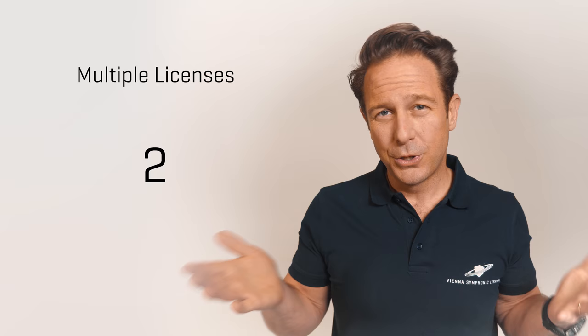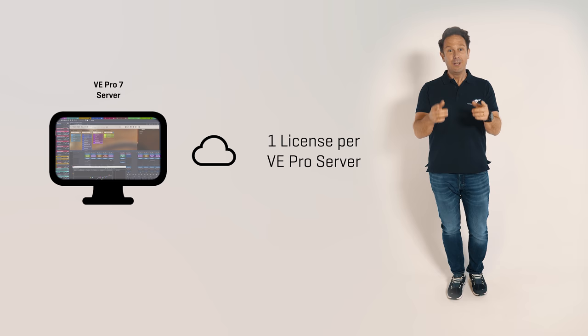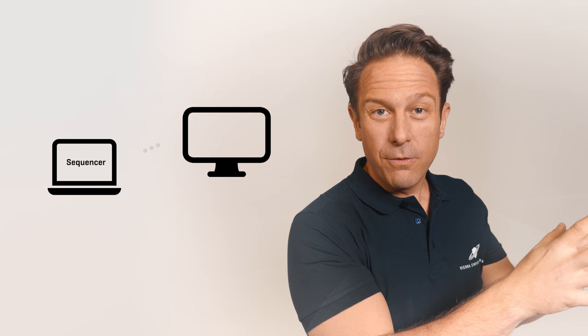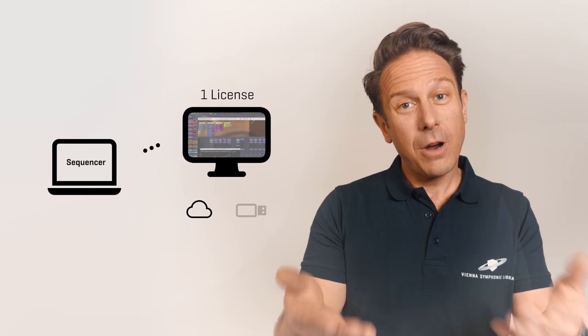Number two: a two-computer setup, and we have two options here. As you know, you only need a license for the computer that actually uses the Vienna Ensemble Pro server to host your plugins. Option A: if you're simply using your main computer for your sequencer and then connecting to the Vienna Ensemble Pro server on your networked computer, you only need one VE Pro license on that networked computer. Your choice is iLock cloud or iLock key, as you like.